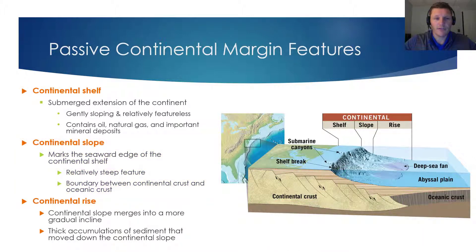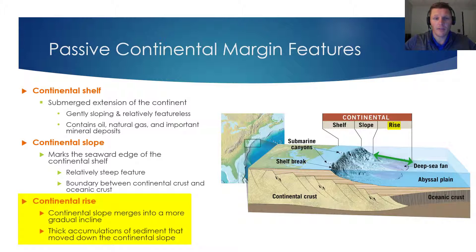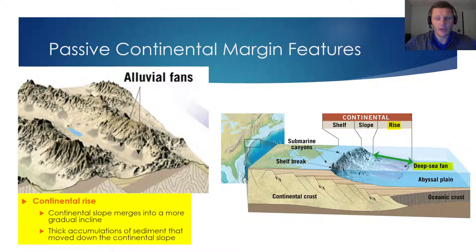The third and final feature of passive continental margins is the continental rise. This is where the continental slope slowly merges into a more gradual incline. The continental rise has slope to it, but it's not nearly as steep as the continental slope. In this region, you'll find thick accumulations of sediment that have moved down the continental slope. The deep sea fan visible in this picture may remind you of the alluvial fans we learned about during our deserts podcast.